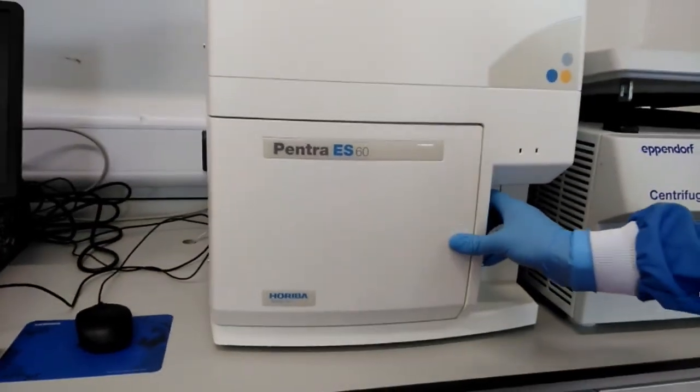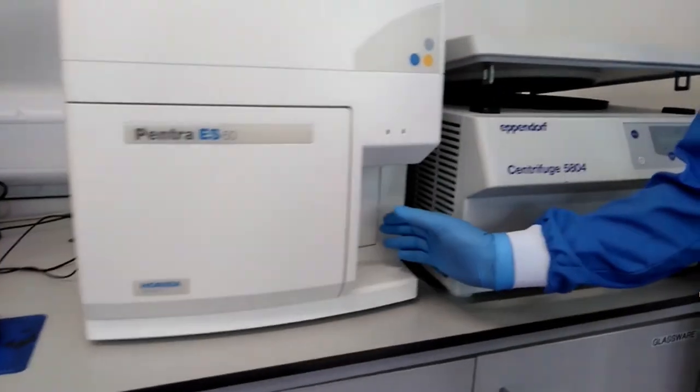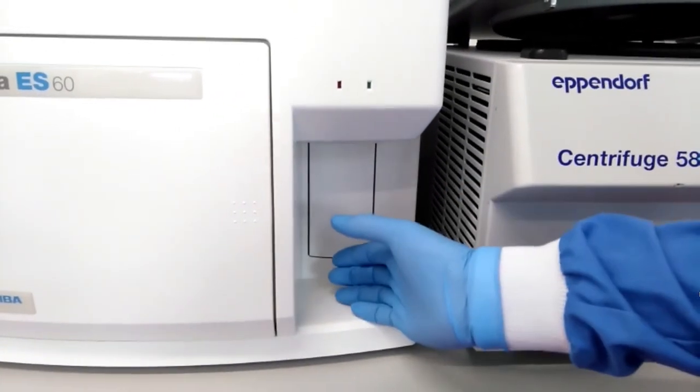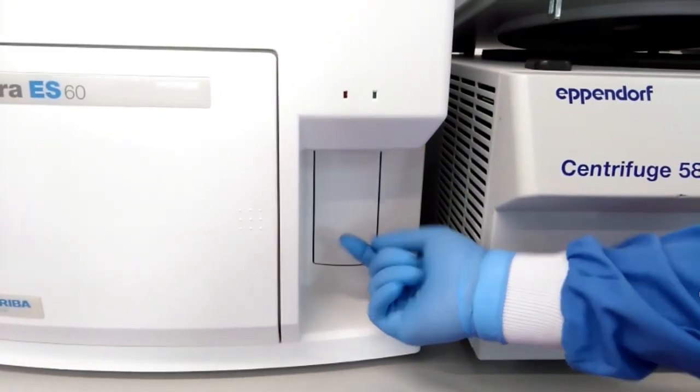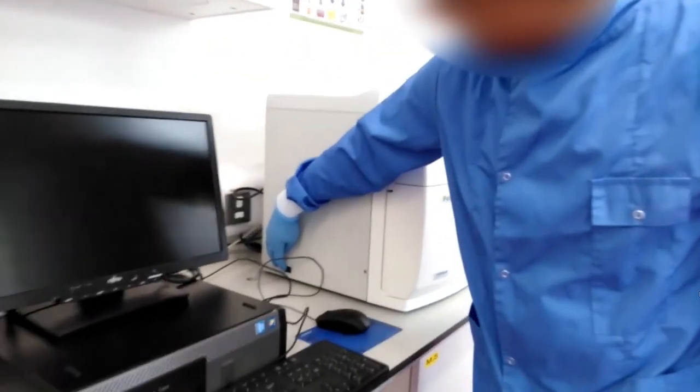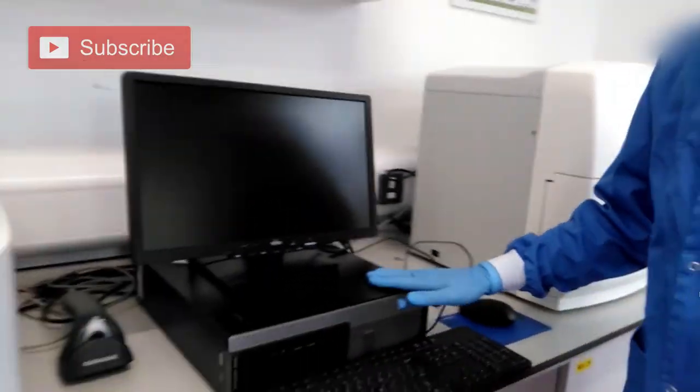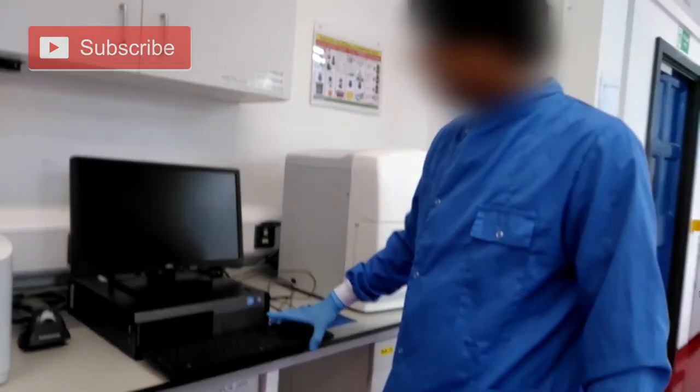On this side is the sampling area. A probe comes out from the top, sucks 30 microlitre blood, and then goes back. The power button is located on the left side. Because the system is connected with the computer, the next step is to switch on the computer as well.